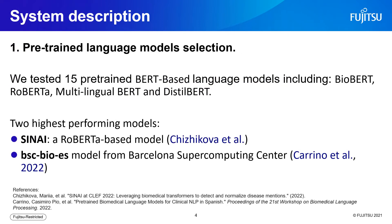The first step is pre-trained language model selection. We used the Hugging Face Model Hub to search for fill-mask and token classification models suitable for Spanish Named Entity Recognition of diseases. We tested 15 pre-trained BERT-based language models, including BioBERT, RoBERTa, Multilingual BERT, and DistilBERT. After analysis, we identified the two highest performing models for our joint learning approach: CINAI, a RoBERTa-based model from the CINAI team at the Disease Text Mining Shared Task in 2022, and BSC-BIOS, a RoBERTa-based model from the Barcelona Supercomputing Center trained on a biomedical corpus in Spanish.